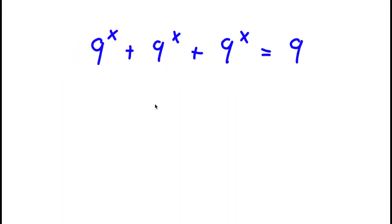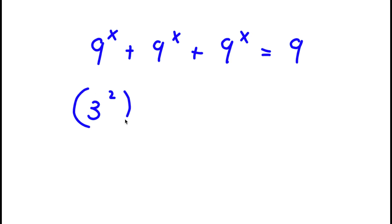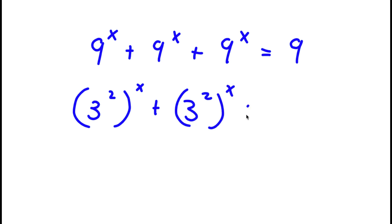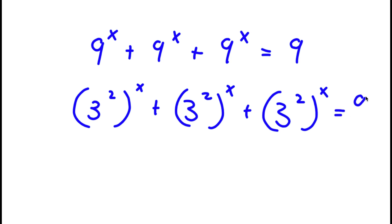In this problem I have 9 to the power of x plus 9 to the power of x plus 9 to the power of x is equal to 9. The first thing I'm going to do is rewrite the 9s as 3 squared, so now I have 3 squared to the power of x, three times, is equal to 9.